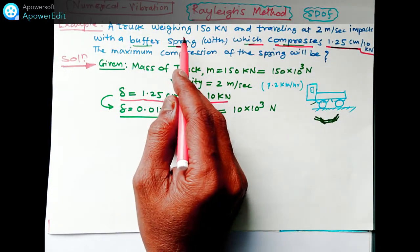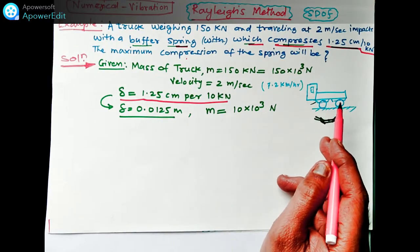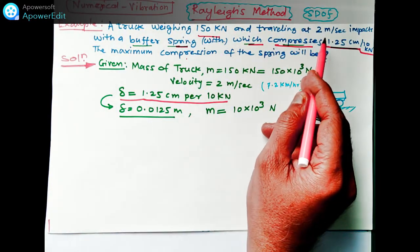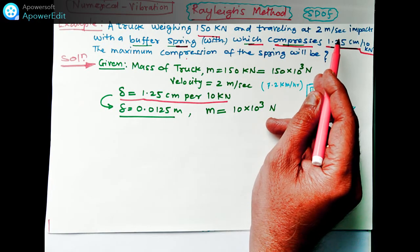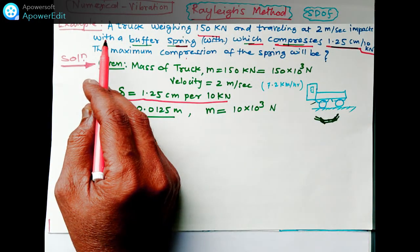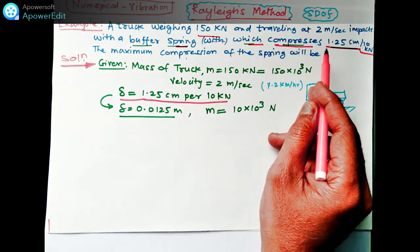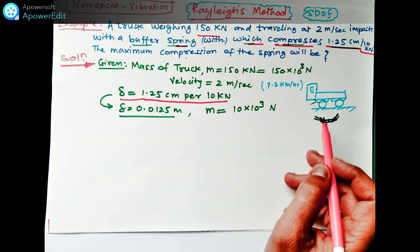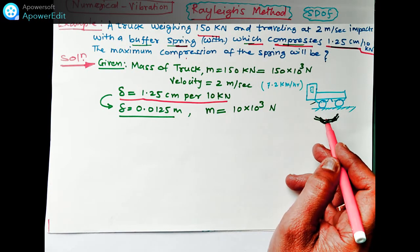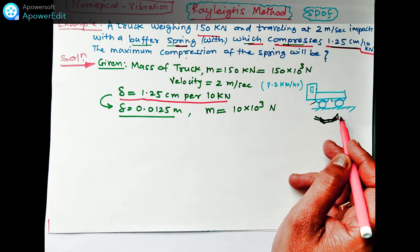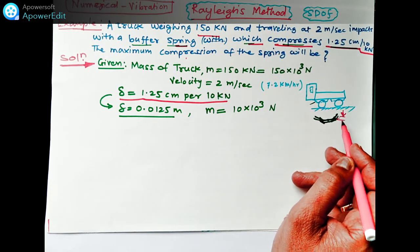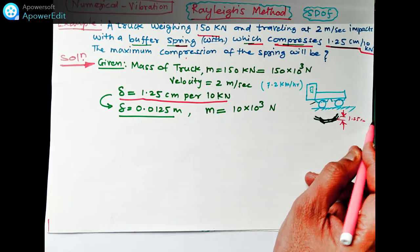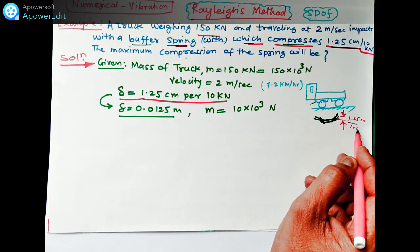A truck weighing 150 kN, traveling at 2 m per second means about 7.2 km per hour, impacts buffer springs which compress 1.25 cm per 10 kN. If 10 kN is there, the springs below this truck, the buffer springs, will deflect by this amount. So it will be 1.25 cm per 10 kN weight.